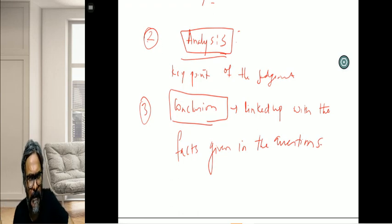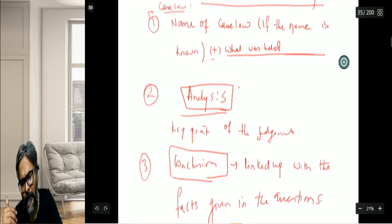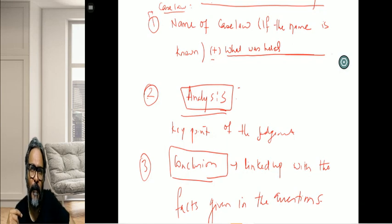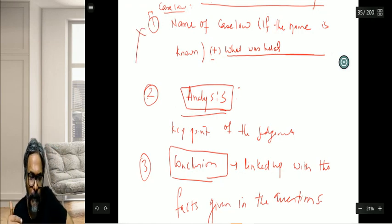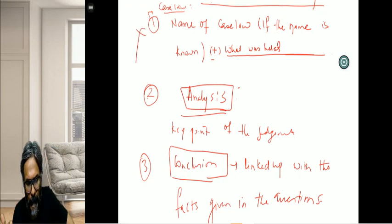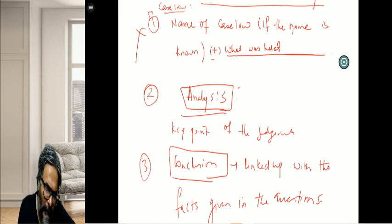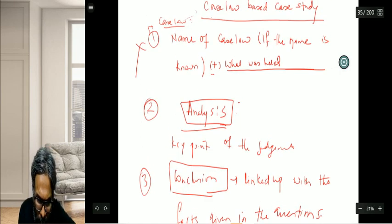Put these three particular fragmentations for writing of the case law. Those who don't know the name of the case law should avoid point number one and write points two and three. Or in point number one, if you don't know the case law name, at least write issue under consideration.